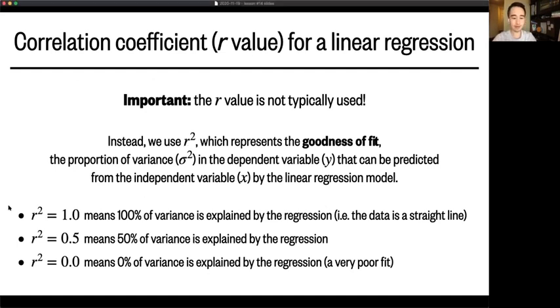So an r squared of 1 means that the regression can explain 100% of the variance. And that only happens if your data is a straight line already. An r squared of 0.5, that means 50% of the variance is explained. And that's a more common situation with real data. An r squared of 0 suggests the regression is a really poor fit and you shouldn't be doing a regression in the first place.